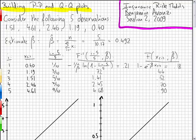To build a PP plot and a QQ plot, you need to build the following table. The first column gives you the number of the observation. In the second column you have the ordered observations, from the lowest to the biggest. In the third column you have the cumulative probability that we assign to that observation. It's I minus 0.5 over n. Since n is 5 here, we have 5.